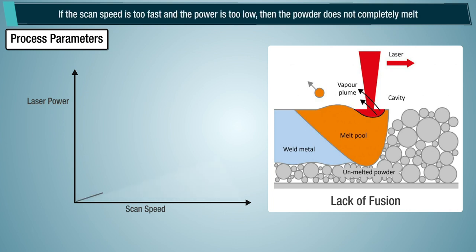If the scan speed is too fast and the power is too low, then the powder does not completely melt, leading to lack of fusion and porosity.